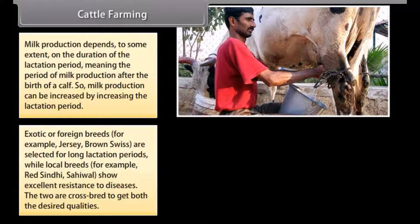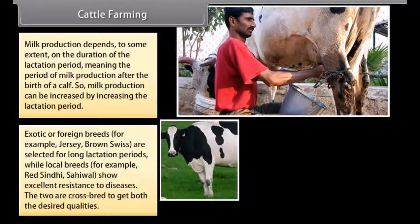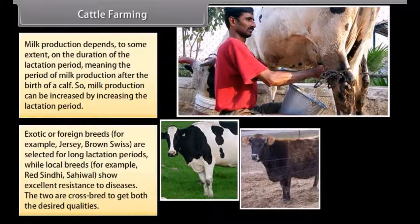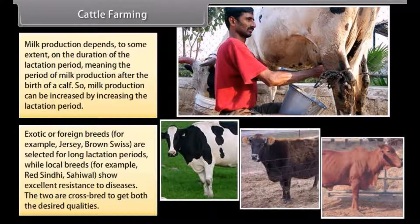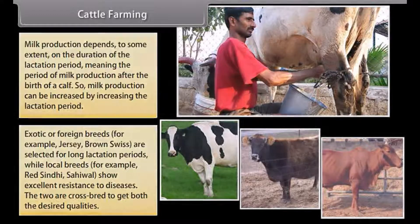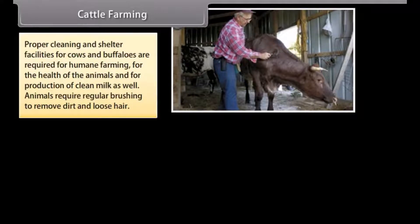Exotic or foreign breeds, for example Jersey and Brown Swiss, are selected for long lactation periods, while local breeds, for example Red Sindhi and Sahiwal, show excellent resistance to diseases. The two are crossbred to get both desired qualities. Proper cleaning and shelter facilities for cows and buffaloes are required for humane farming, for animal health, and for the production of clean milk. Animals require regular brushing to remove dirt and loose hair.